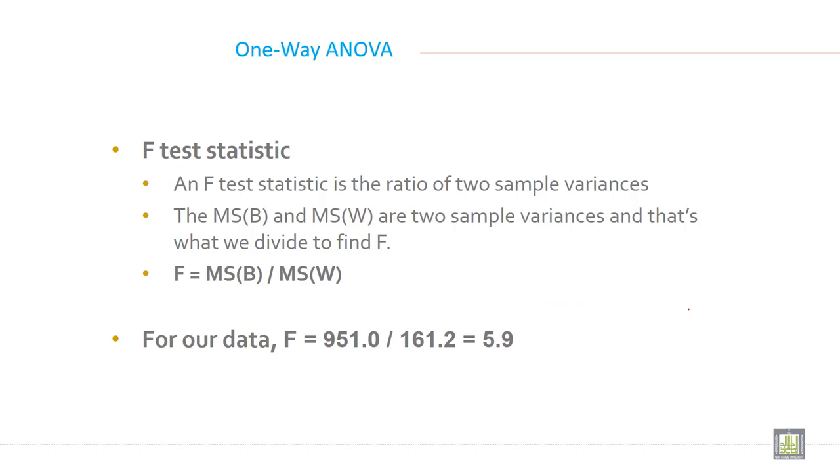F statistics is an important component of the ANOVA table. The F test statistic is the ratio of two sample variances. The MS(B) and MS(W) are two sample variances and that's what we divide to find F.